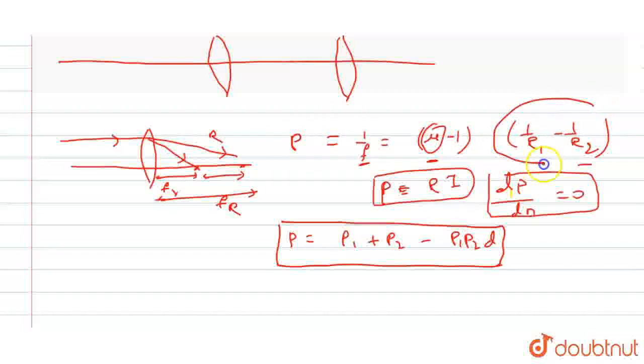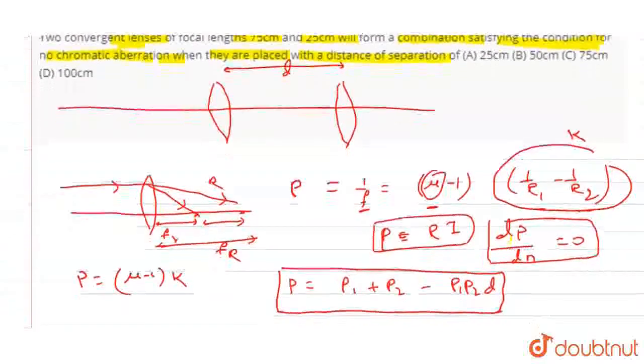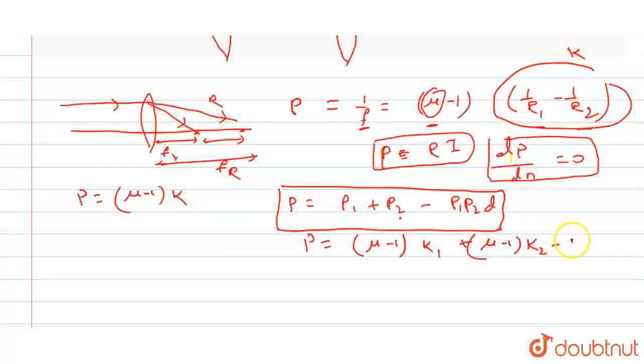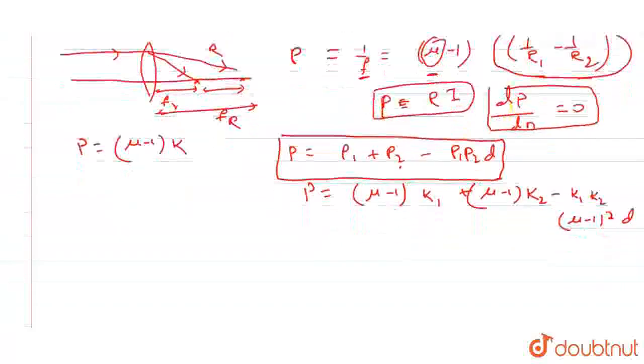If we call k, then what is the power? The power is mu minus 1 into k. k depends on r1 and r2. If the lens is different, the refractive index is the same. So k is the same. So power is mu minus 1 into k1 plus mu minus 1 into k2 minus k1 k2 mu minus 1 whole square into d. Now we differentiate it.